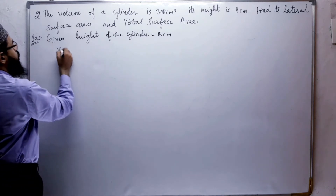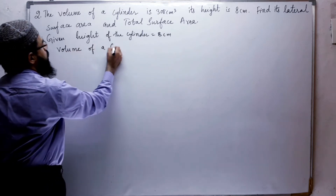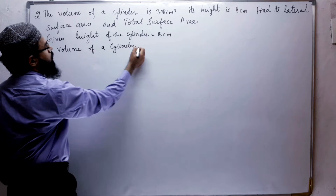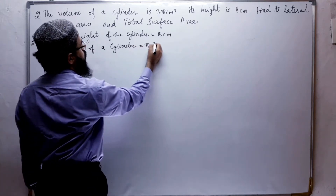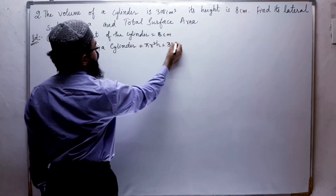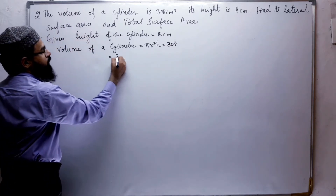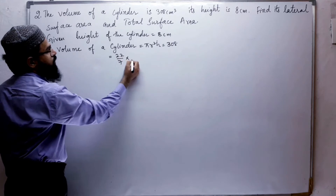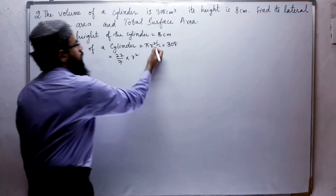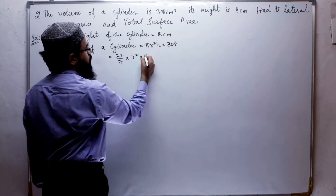Volume of a cylinder is equal to π r² h, which equals 308 cubic centimeters. The value of π is 22/7. We have to find r. Height h is given as 8 centimeters.